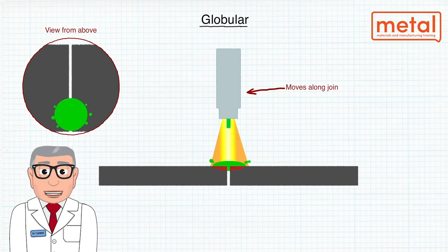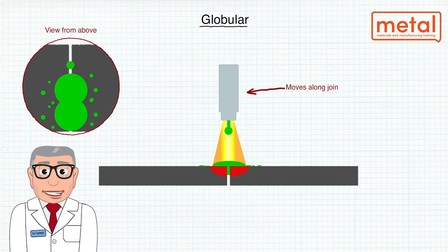The globule grows typically to one and a half to three times the size of the electrode tip before transferring across the arc in an irregular path. The drop splashes into the weld pool and produces much more spatter than is the case with spray transfer.